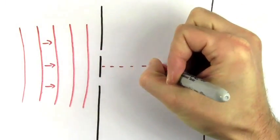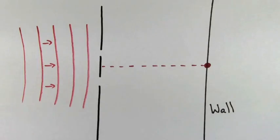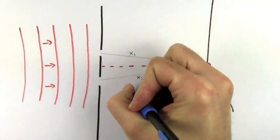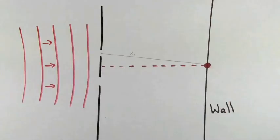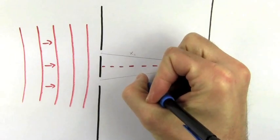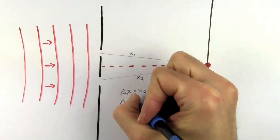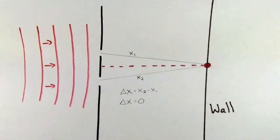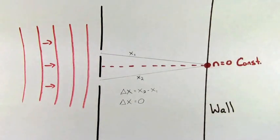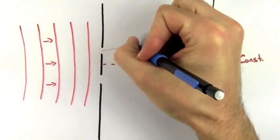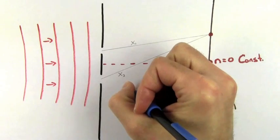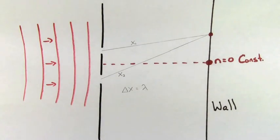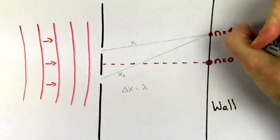You'll always see a bright constructive point along the line in the middle of the two slits. The waves from each hole have to travel a certain distance to make it to that point. The path length difference, delta x, is defined as the difference between how far the wave from one hole has to travel to get to a point on the wall, compared to how far the wave from the other hole has to travel to that same point. Both waves travel the same distance to the midway point, so the path length difference to the center point is zero. We call this center bright spot the n equals zero constructive point, or the n equals zero maximum. For the next bright spot, the wave from the bottom slit has to travel one wavelength farther than the wave from the top slit, so the path length difference is equal to one wavelength. We call this bright spot the n equals one constructive point, or the first order maximum.